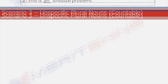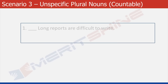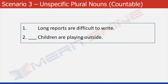Now let us move to scenario 3. Look at this: Long reports are difficult to write. This is the case of countable unspecific plural nouns, and it would not take any article as per our framework. Any and many reports can be long — we do not know anything about this particular report. Dash children are playing outside — again countable unspecific plural, so no article.